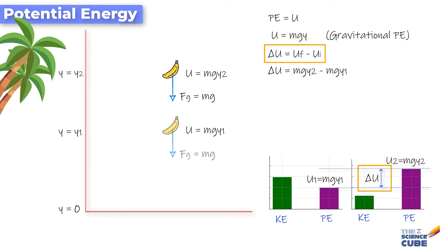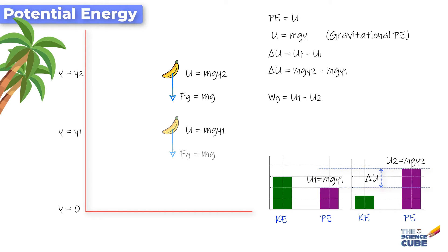So ΔU = mg·y2 − mg·y1. We can also calculate the work done by the gravitational force when moving the object from y1 to y2 as: Wg = U1 − U2, which equals mg·y1 − mg·y2, which equals −ΔU.